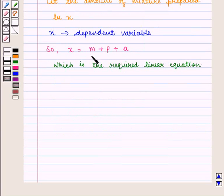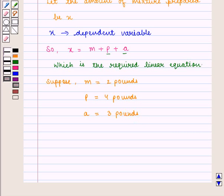By giving any values to M, P, and A, we can find the value of X. Suppose M is equal to 2 pounds, P is equal to 4 pounds, and A is equal to 3 pounds. Then, X, which is given by M plus P plus A, will be equal to 2 plus 4 plus 3, that is 9 pounds.